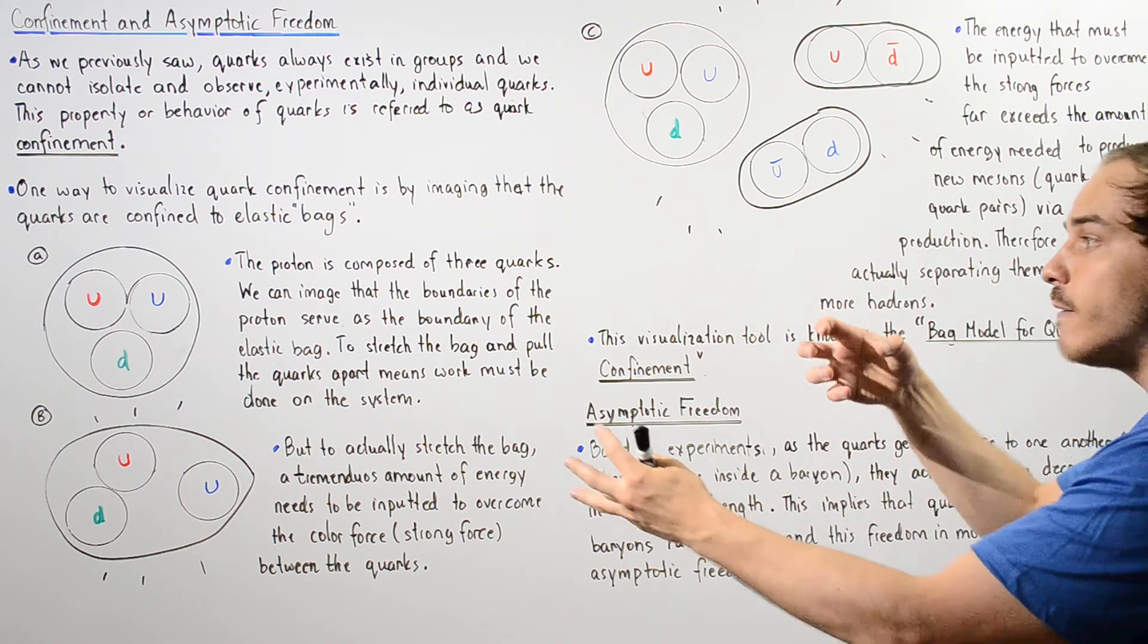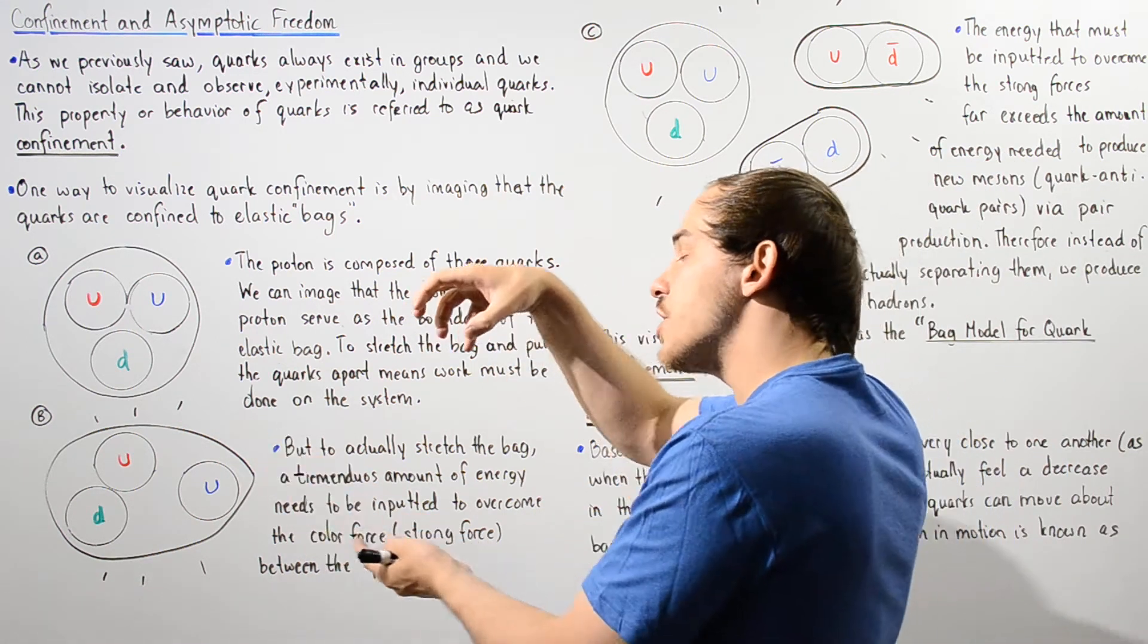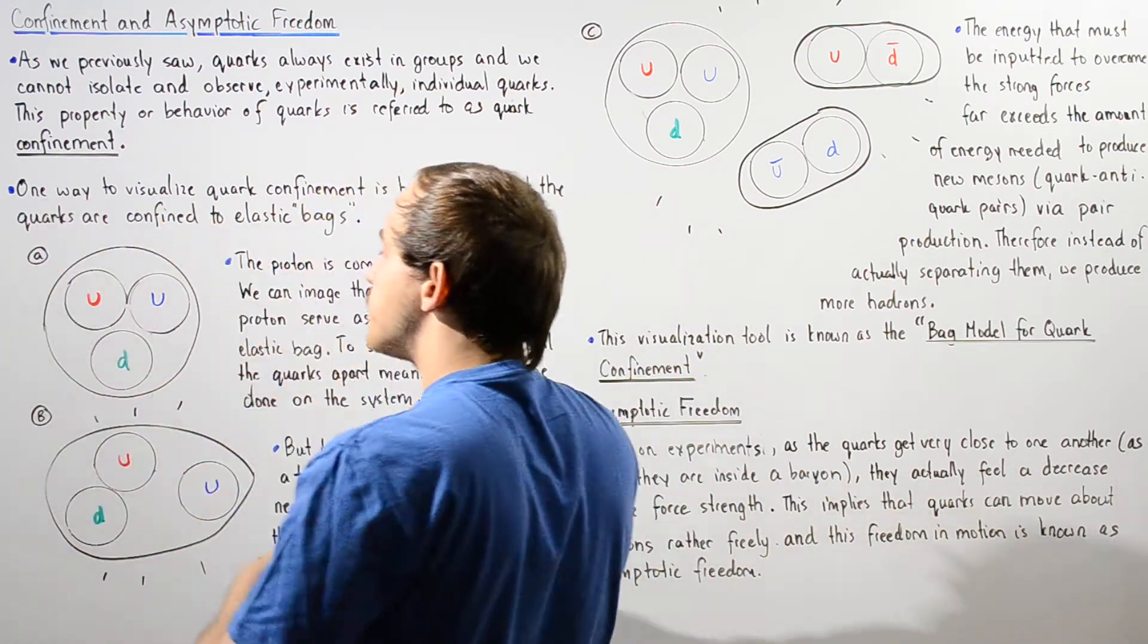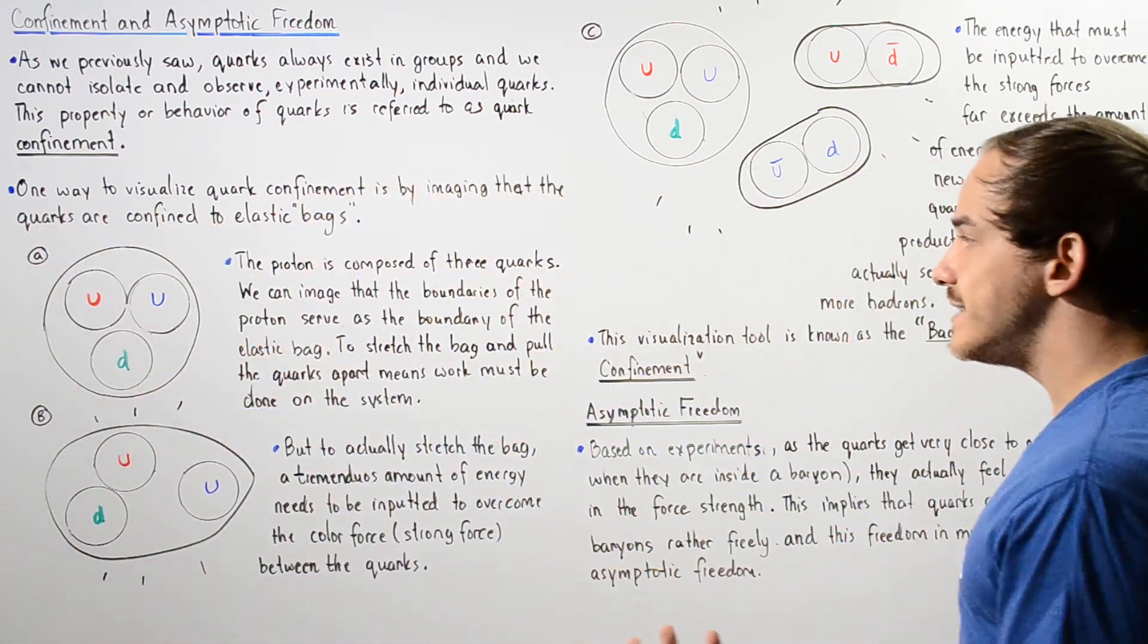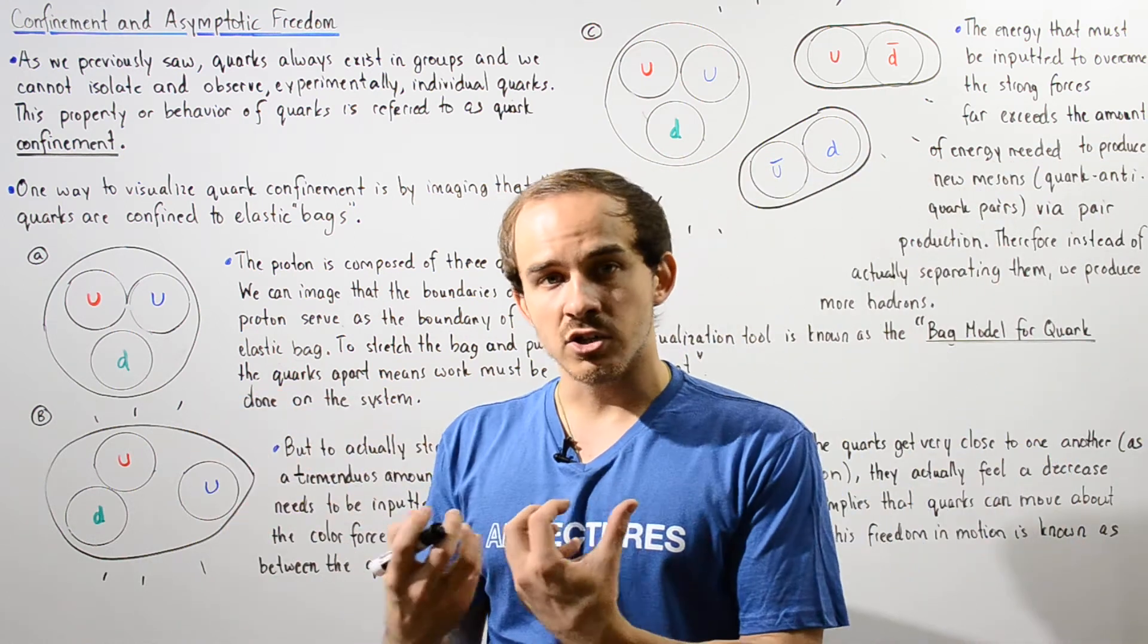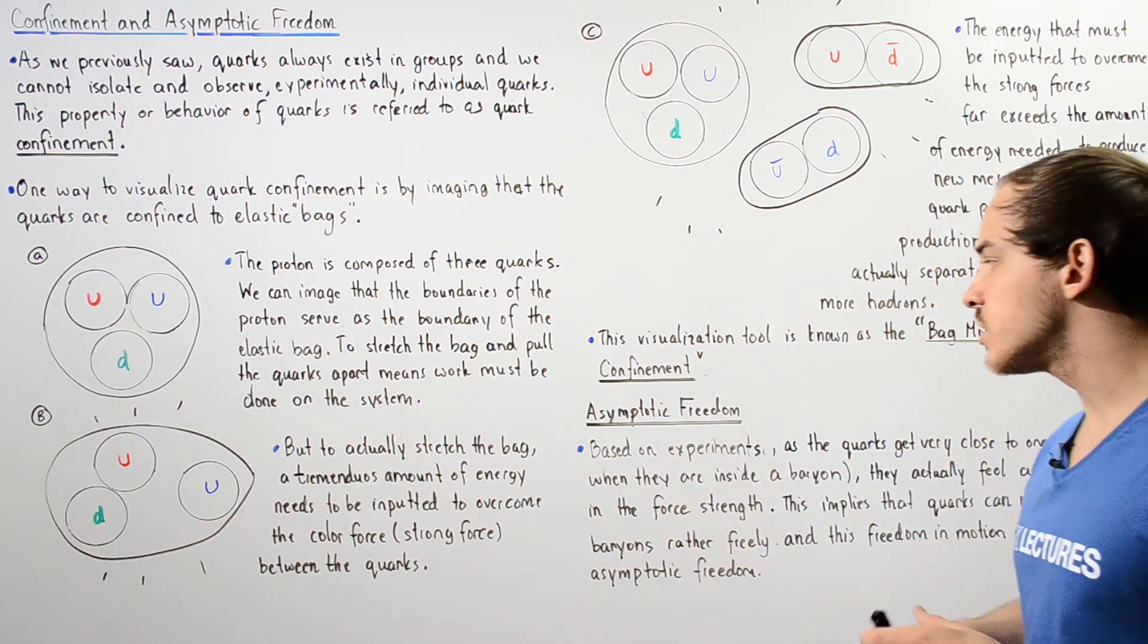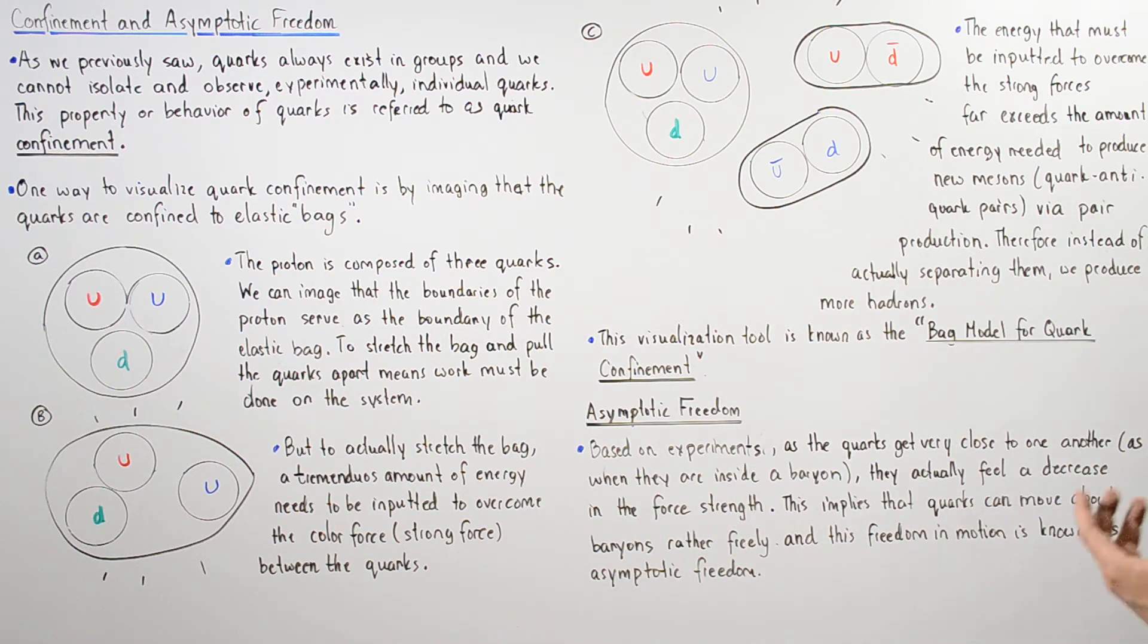They can actually now move with a great amount of freedom around the space of the proton. This idea that as the quarks get extremely close to one another, the force decreases between those quarks is known as the asymptotic freedom of those quarks.